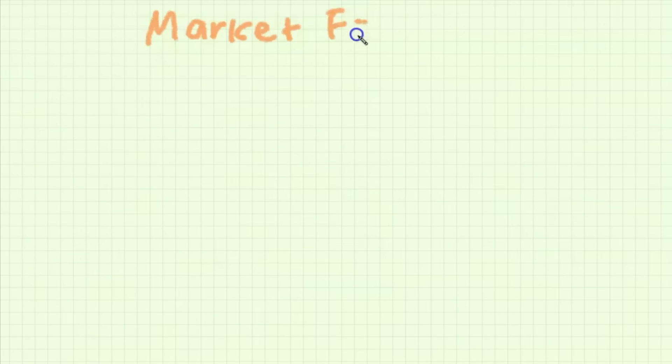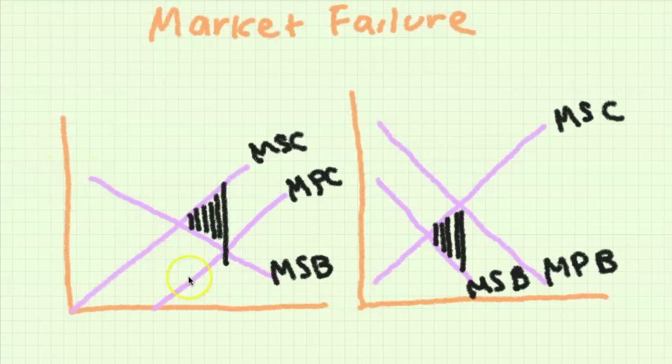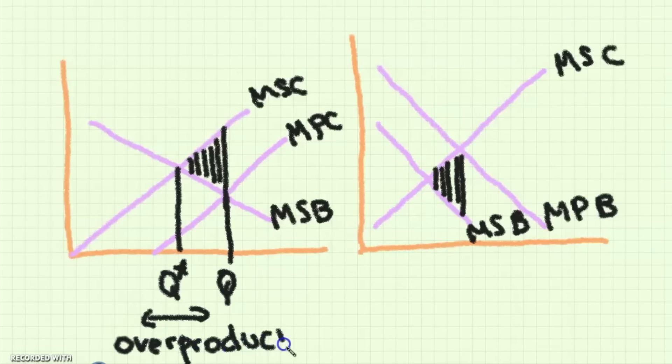And now market failure. Market failure occurs because we do not achieve allocative efficiency likely because of the divergence or the difference between private and social costs and benefits. In the case of a negative externality of production the private costs of producing something are lower than the social costs, such as fossil fuels which are bad for pollution. This leads to the overproduction of a good.